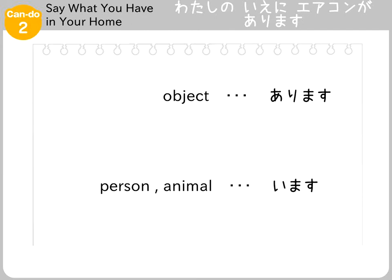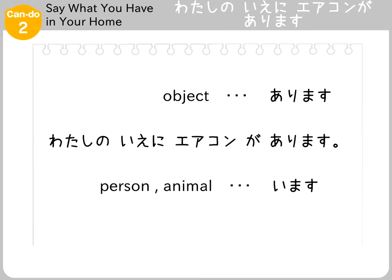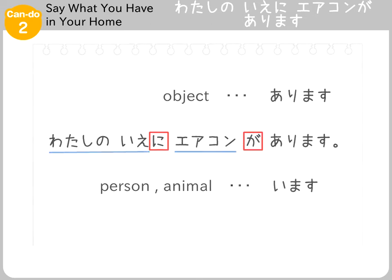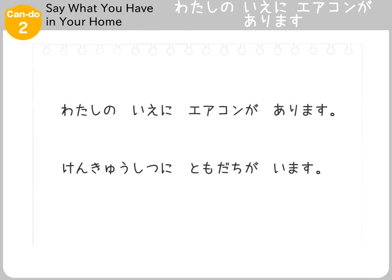When you want to say where an object is with あります, or where a person is with います, you will use the particle に after the place or location and が after the subject. In other words, you will say: place に オブジェクトがあります, or place に ペルソンがいます.